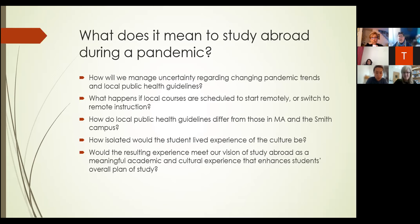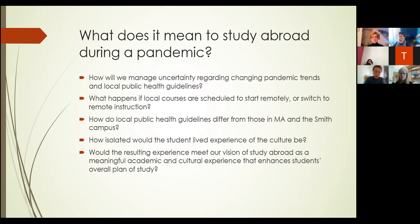Things we'll be thinking about: what happens if local courses are scheduled to start remotely or switch to remote instruction? We can manage that with the Smith courses; it becomes trickier with universities where you're taking classes, but we're looking into that and trying to plan accordingly depending on the scenario. We're also looking at public health guidelines and how they differ from Massachusetts and Smith campus, and trying to align those guidelines as much as possible.